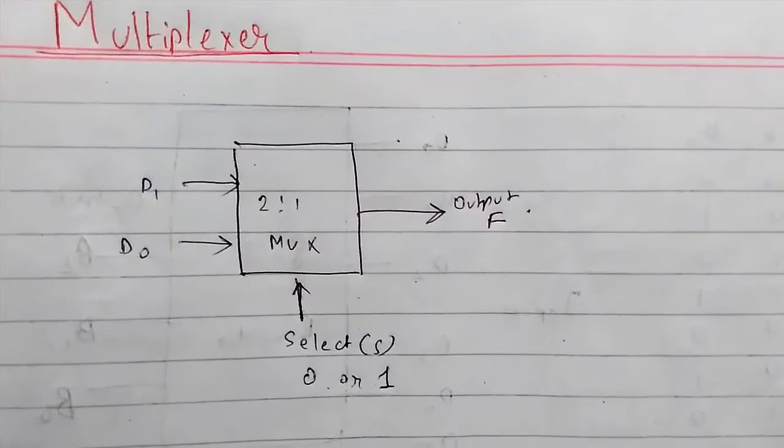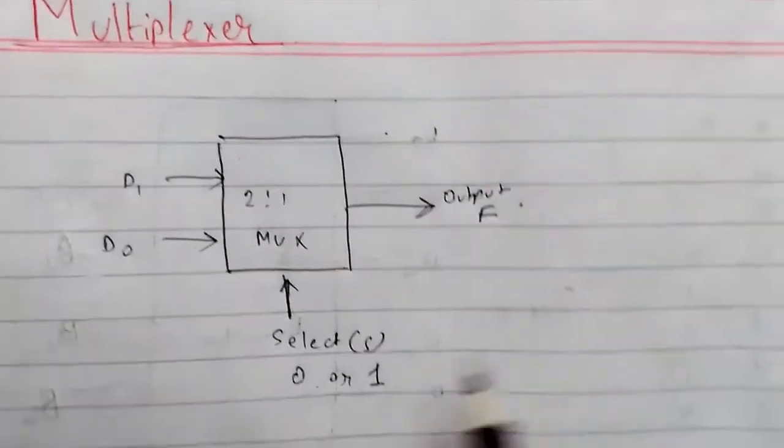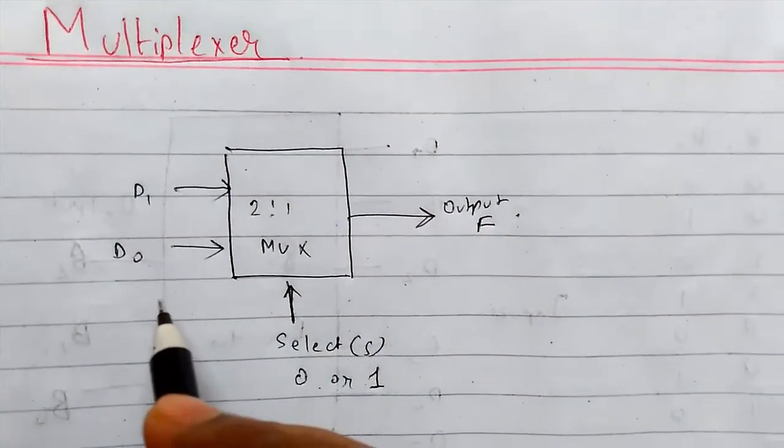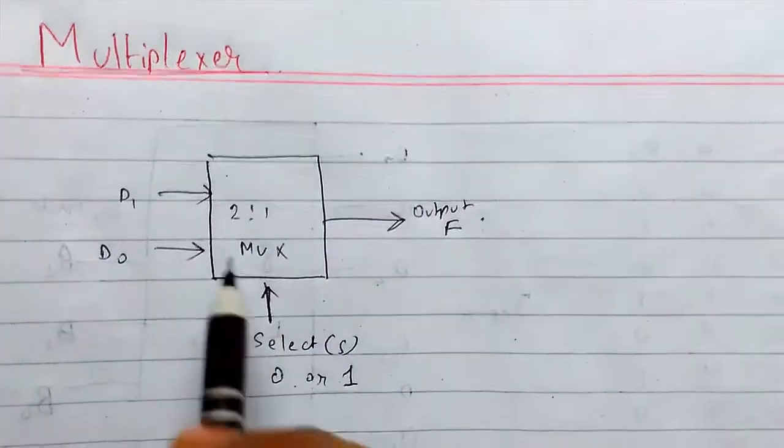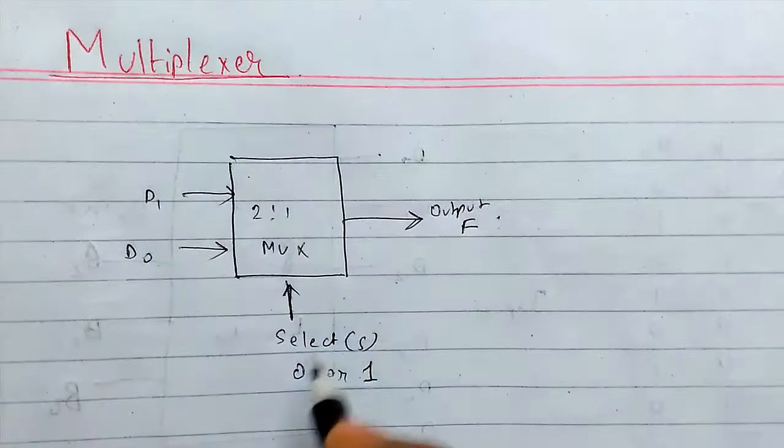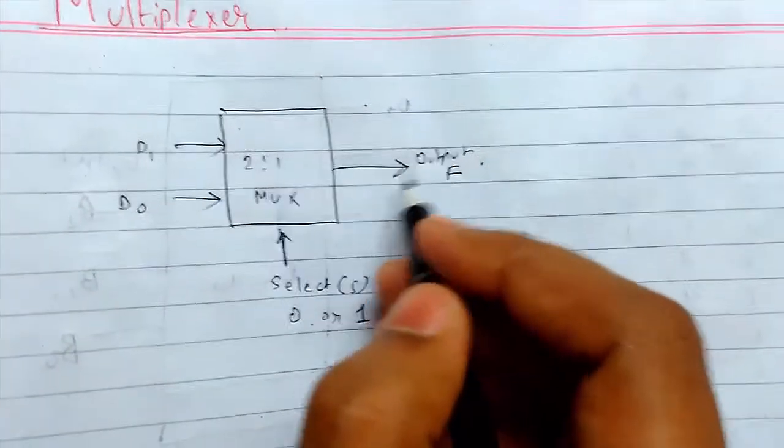If the select input is high, the output will be switched to D1, and if it is low, that is 0, then it will be selected to D0. It basically operates like this switch: whatever data comes from here by selection line, it will pass the data to the output.